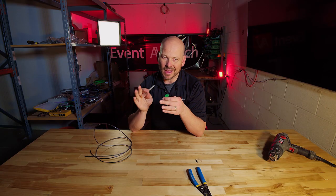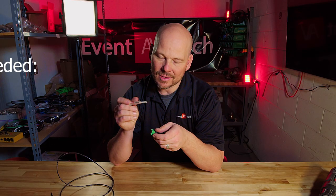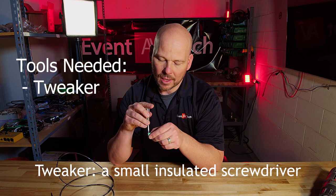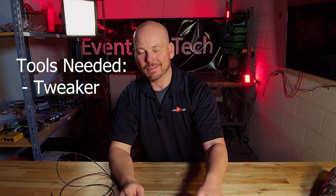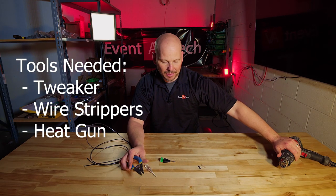Today, we're applying the knowledge of captive screws to a bunch of different types of connectors. Some basics still apply. To do this, you're going to need some sort of tweaker. And so I've got this small screwdriver here. I'm going to need my trusty old wire strippers. I've got some test wire today. And then I'm always going to need my heat gun nearby.